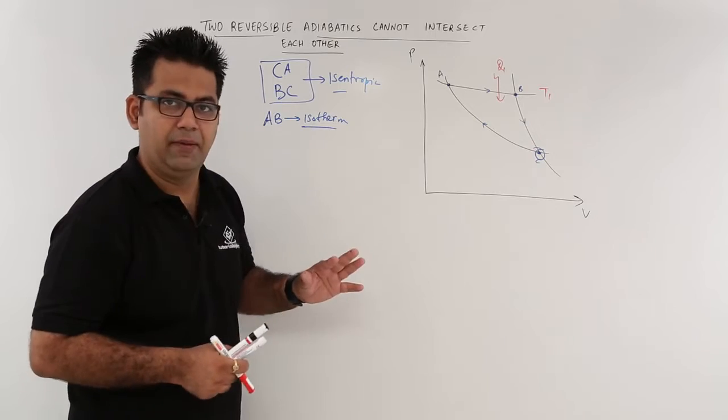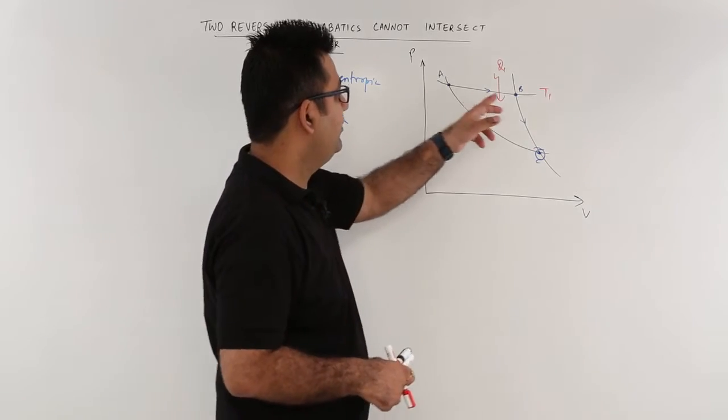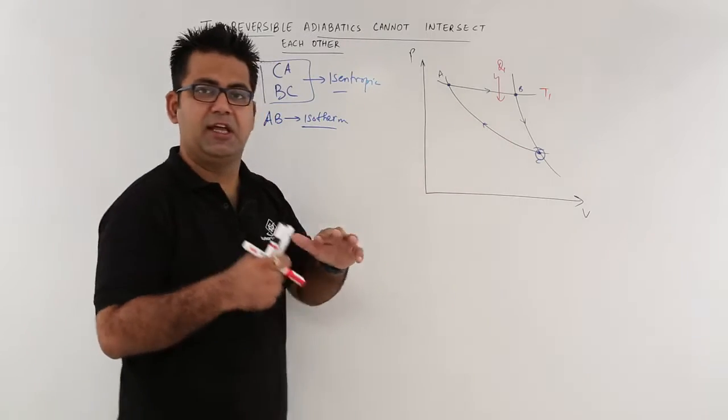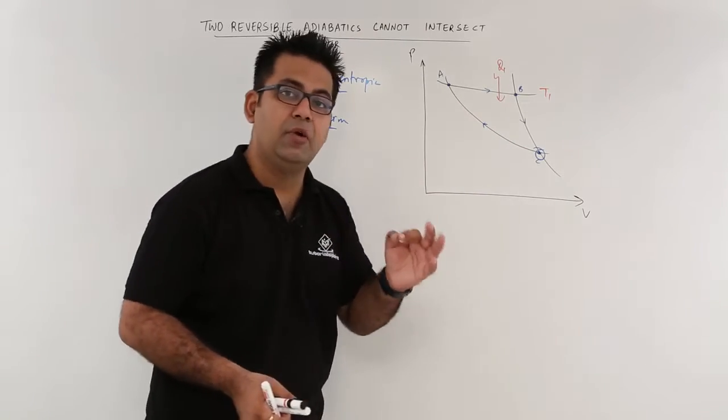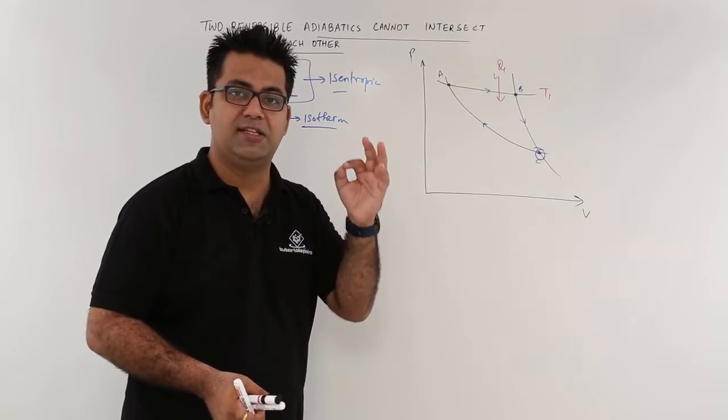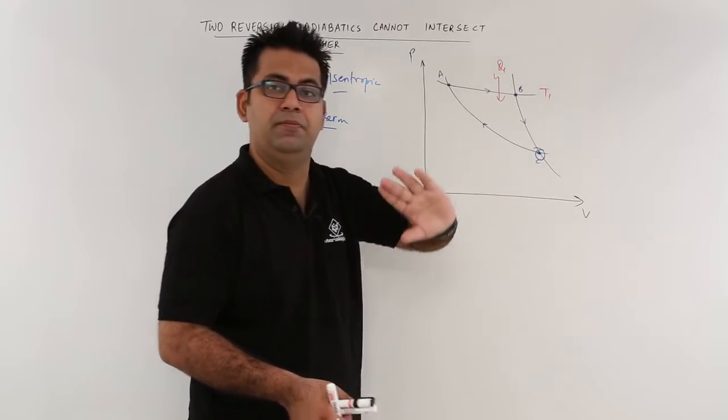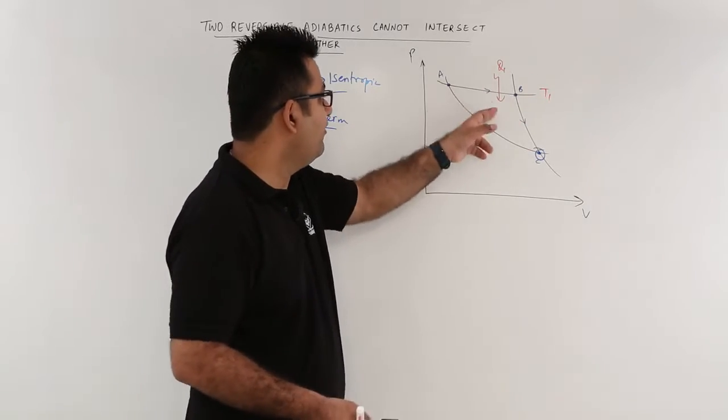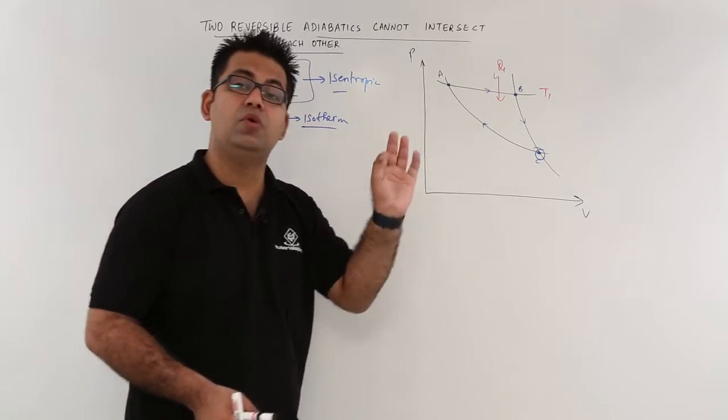So now if you look at this diagram, very clearly it is showing that ABCA is creating a cycle. Now what is this cycle doing? This cycle is exchanging heat with the surroundings at just one temperature. So you just have heat absorption. There is no second temperature and there is no heat rejection.